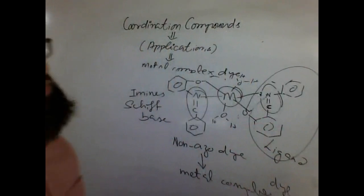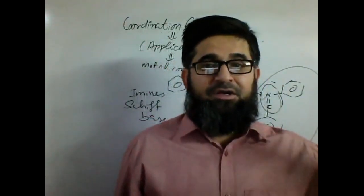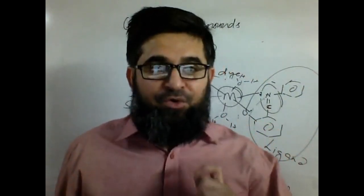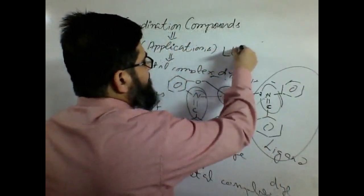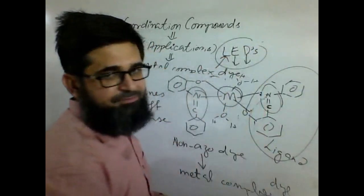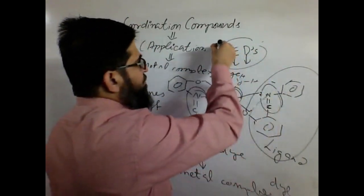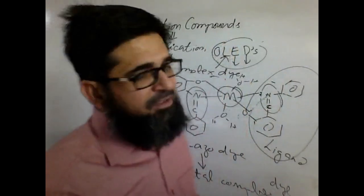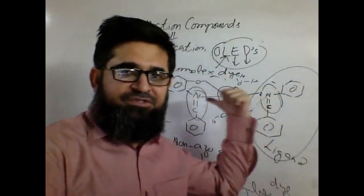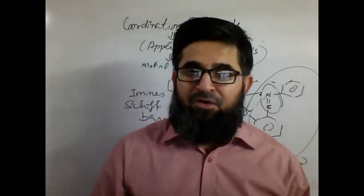They are also usable in electronics, where they produce colorants, colors, LEDs, OLEDs — organic LEDs — organic light emitting diodes. If you generate those LEDs from certain organic molecules, they are called OLEDs. Such complexes are being used for LEDs, OLEDs, for color generation in nanoelectronics and electronics.